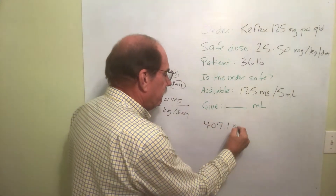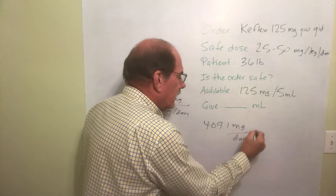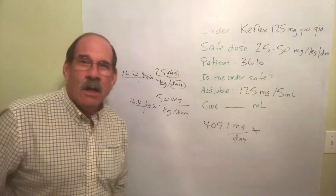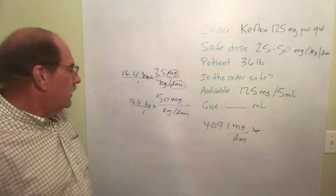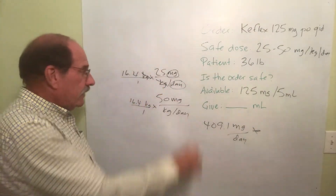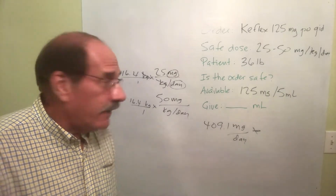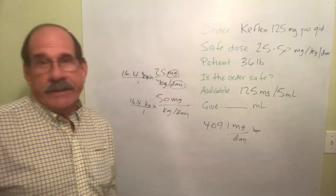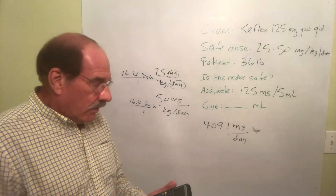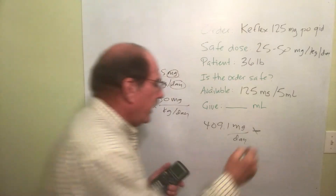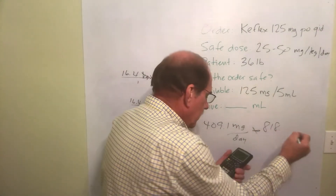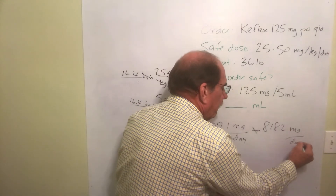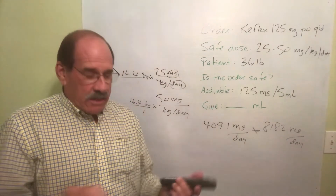The lowest possible safe amount I can give per day is 409.1 milligrams per day. And going up to the upper limit: 16.4 kilograms times 50 — by the way, since 50 is twice 25, this number is twice the lower result. The upper safe limit per day is 818.2 milligrams per day.